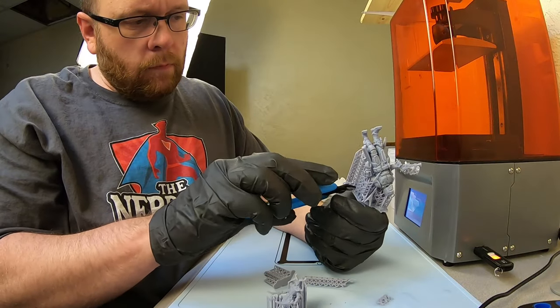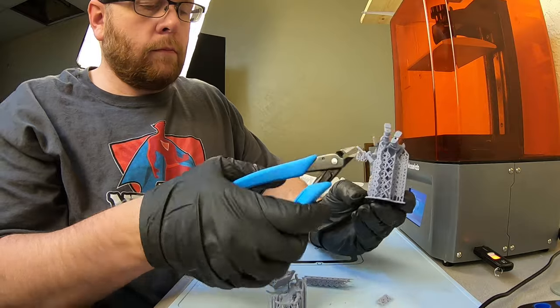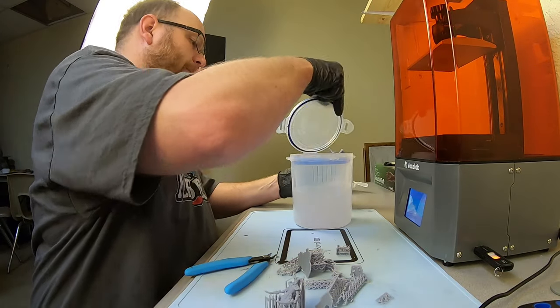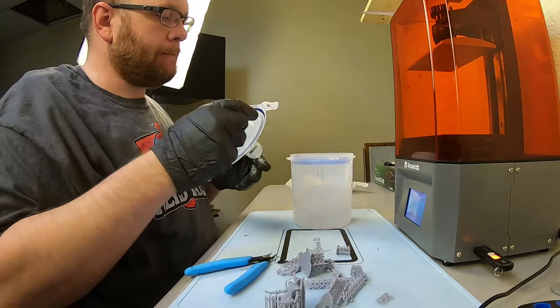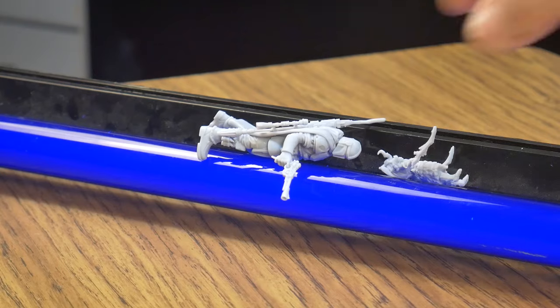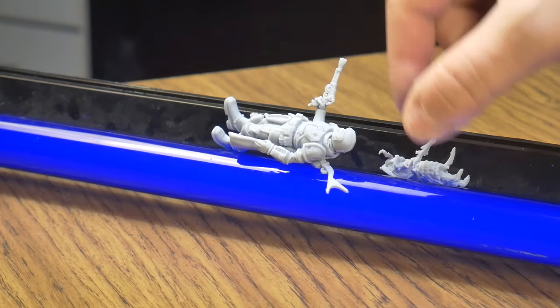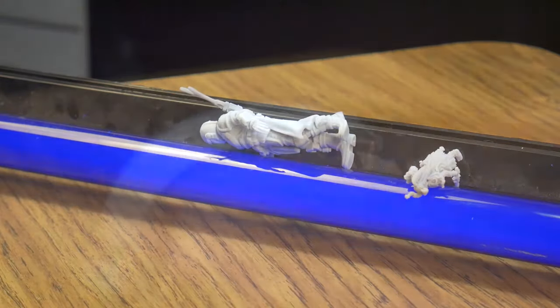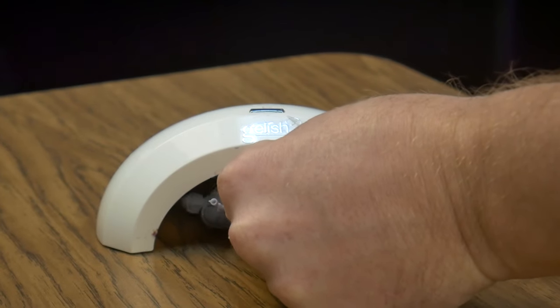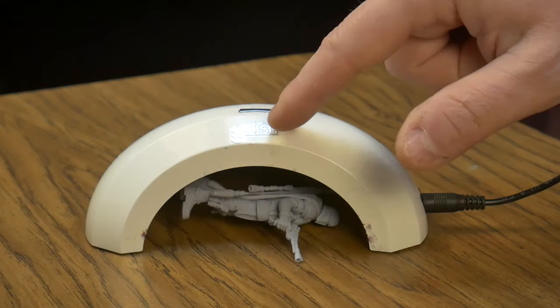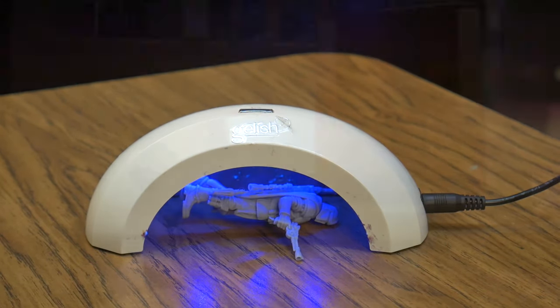The cleaning and curing process is the same as it was with all the other models. I ended up having to break out a toothbrush and get in all the nooks and crannies on these particular models. And I had come to figure out that the black light I was using for curing must not be putting out the right wavelength of light. Because it really wasn't doing a good job. So I had to resort to using my wife's gel nail hardening device. And that ended up curing the models really well.